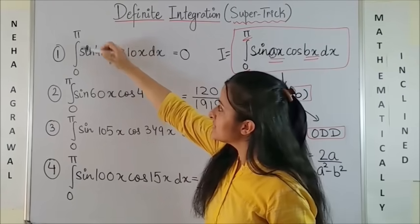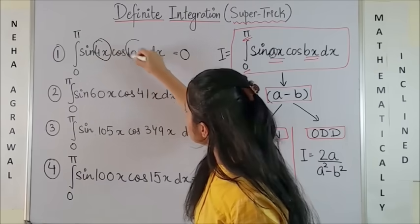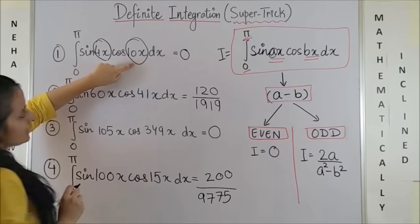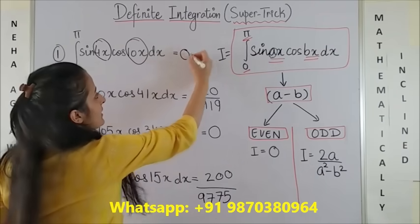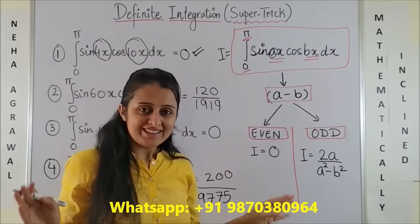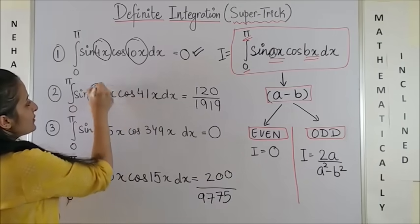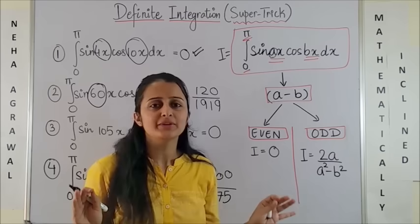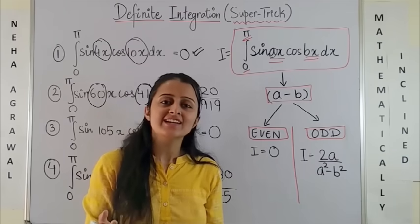Now let's see how we apply all this to these questions. If you were given 0 to π and we had sin(4x) · cos(10x), you know 4 minus 10 gives us minus 6, which is an even number. Thus the answer was simply zero.